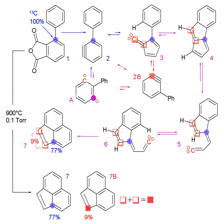In isotopic labeling, there are multiple ways to detect the presence of labeling isotopes: through their mass, vibrational mode, or radioactive decay. Mass spectrometry detects the difference in an isotope's mass, while infrared spectroscopy detects the difference in the isotope's vibrational modes. Nuclear magnetic resonance detects atoms with different gyromagnetic ratios. Radioactive decay can be detected through an ionization chamber or autoradiographs of gels.